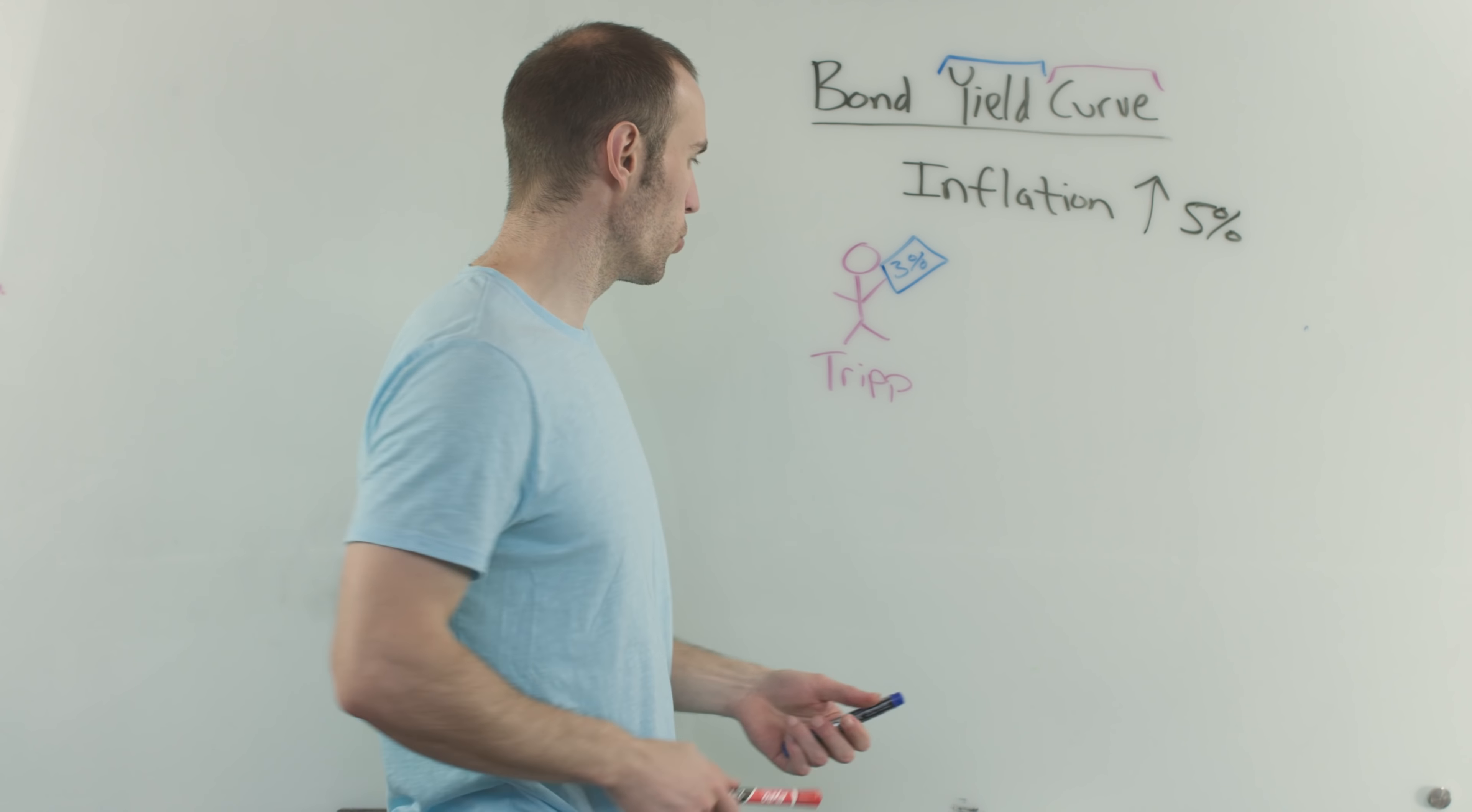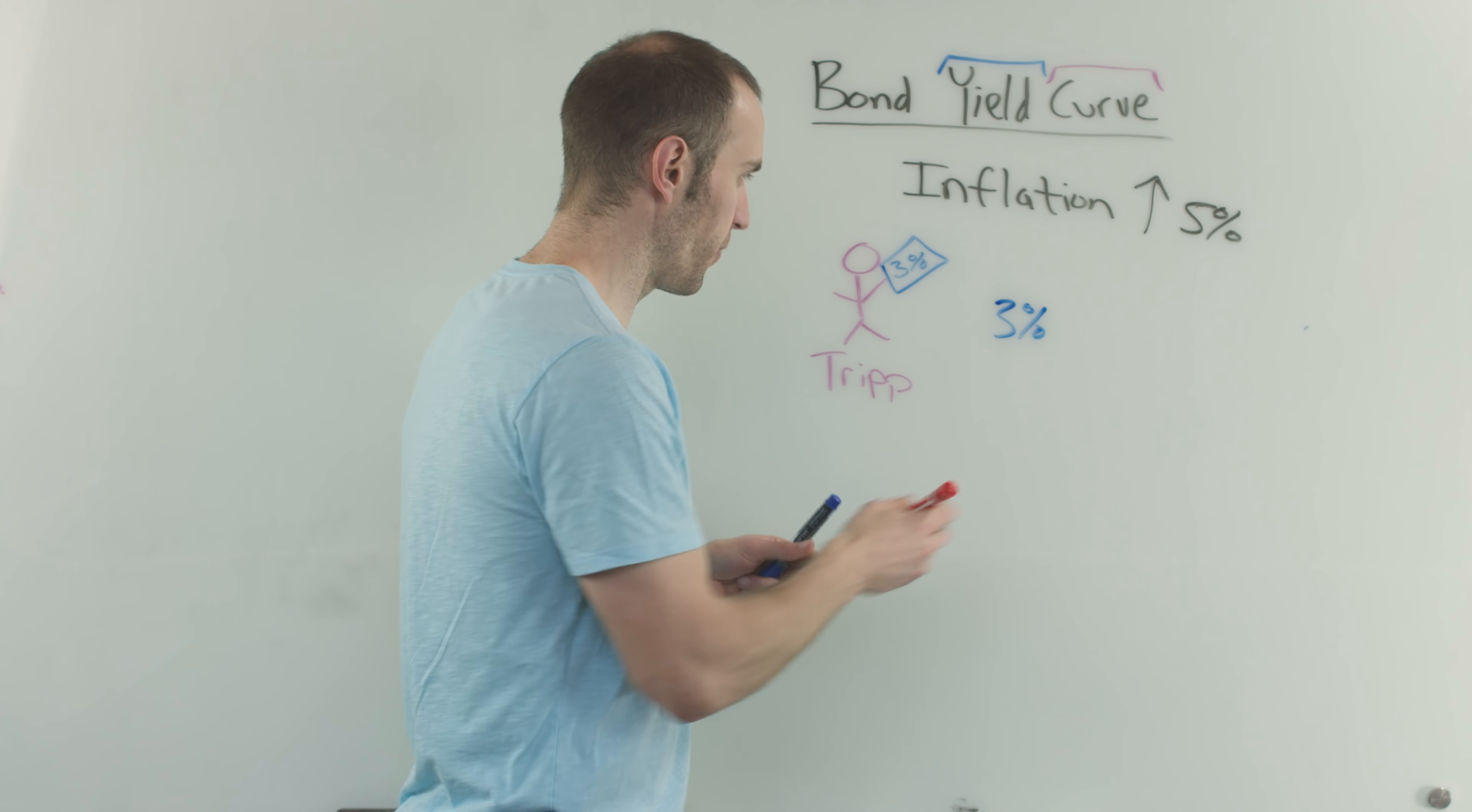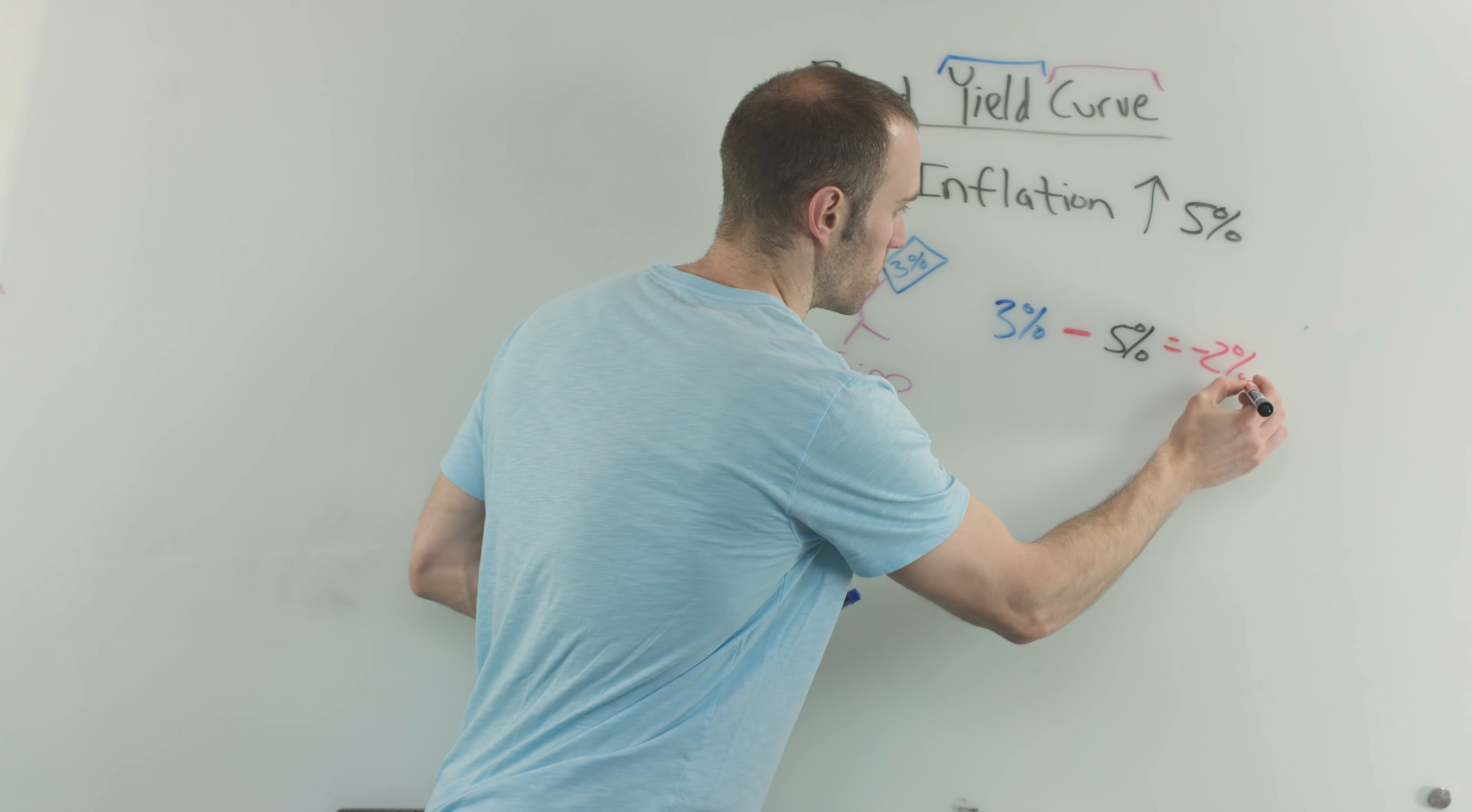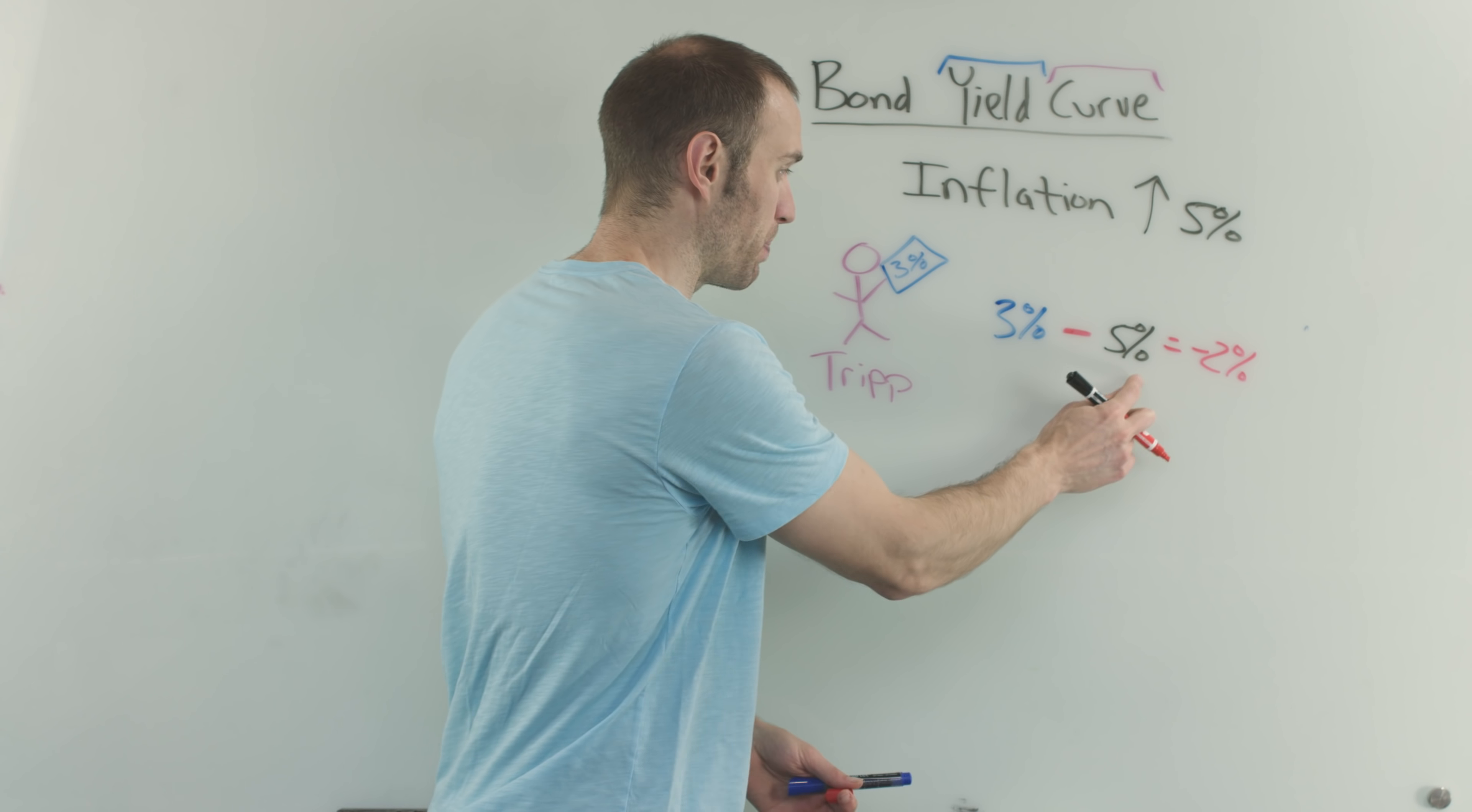So what has that done to the value of Trip's bond? That inflation rising 5%, what has that done to the value of a 3% bond? Well, let's go through the math real quick. So Trip is getting 3%. But now all of a sudden, inflation has risen by 5%. So in all actuality, you gotta subtract away the 5% because that's how much inflation has risen. And now what do you have? You have Trip is technically losing money because he's 2% behind what the actual inflation is. So in that situation, Trip's bond is now losing value because who is gonna want a bond, demand decreasing, who is gonna want a bond that's not keeping up with inflation?